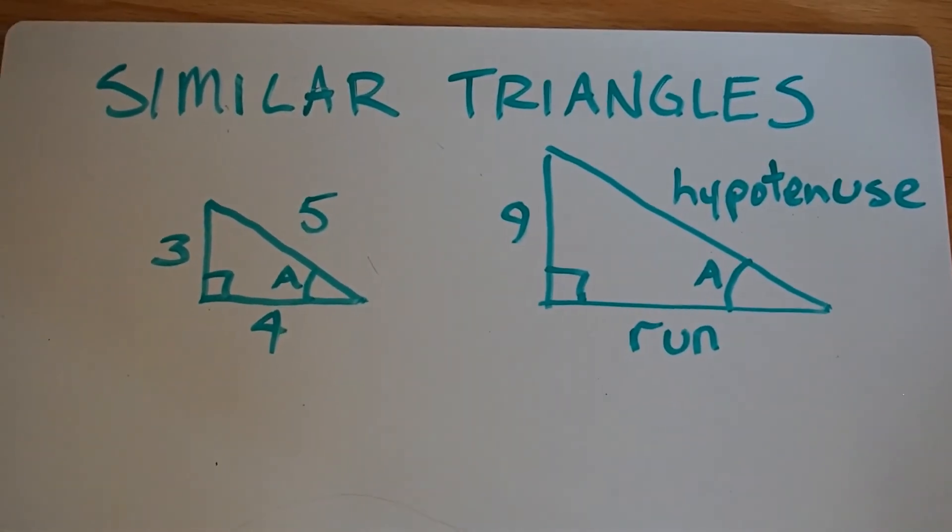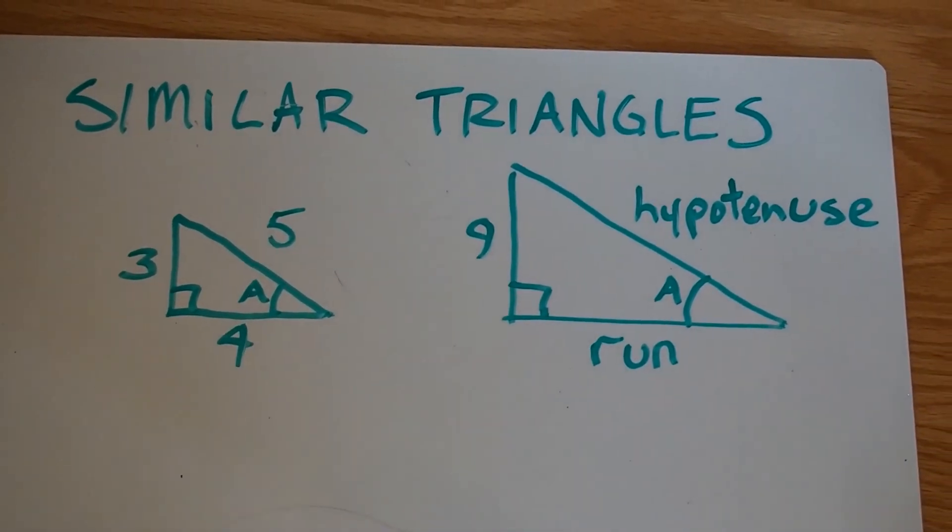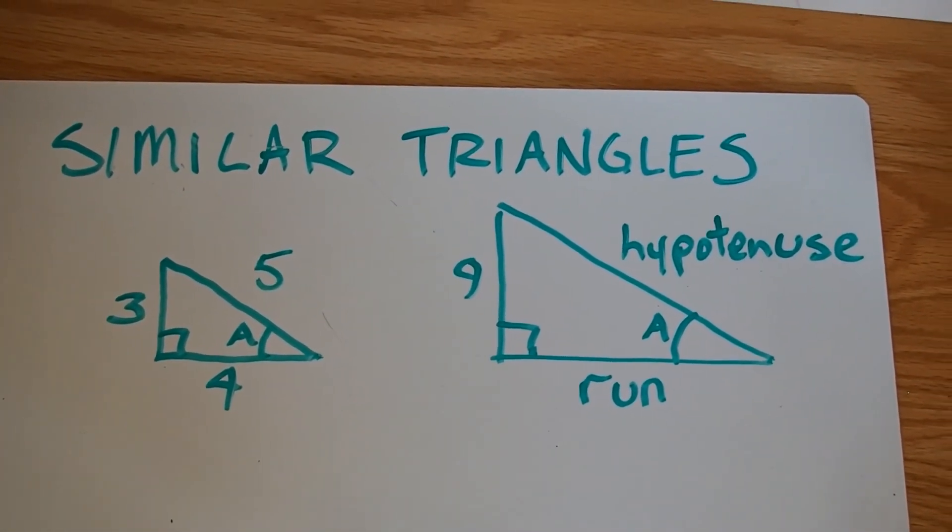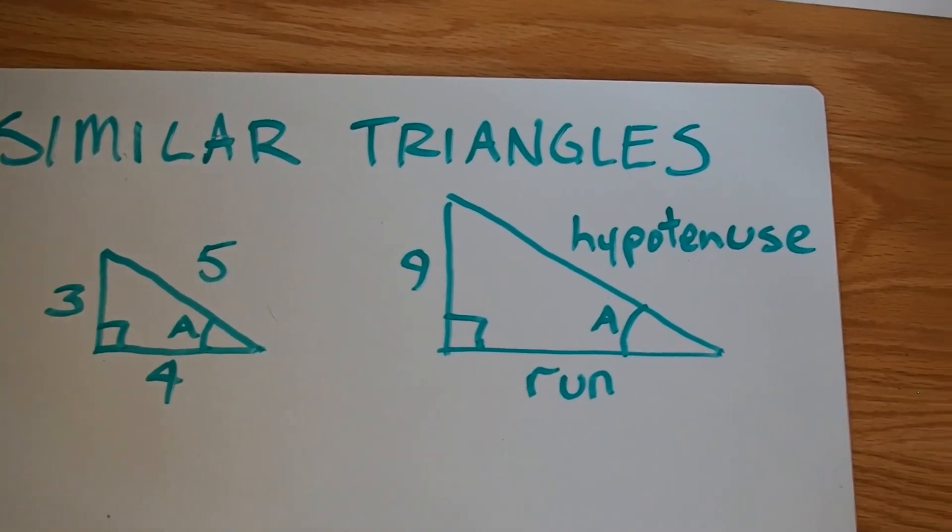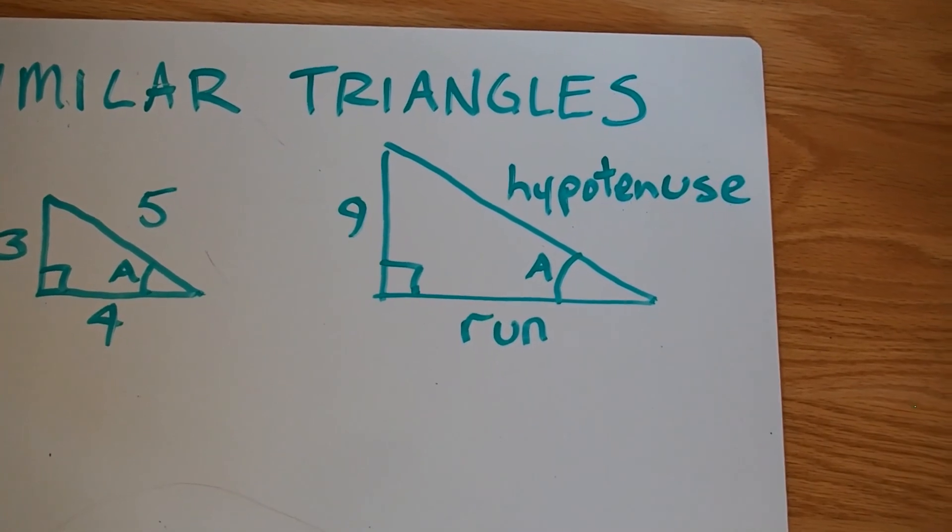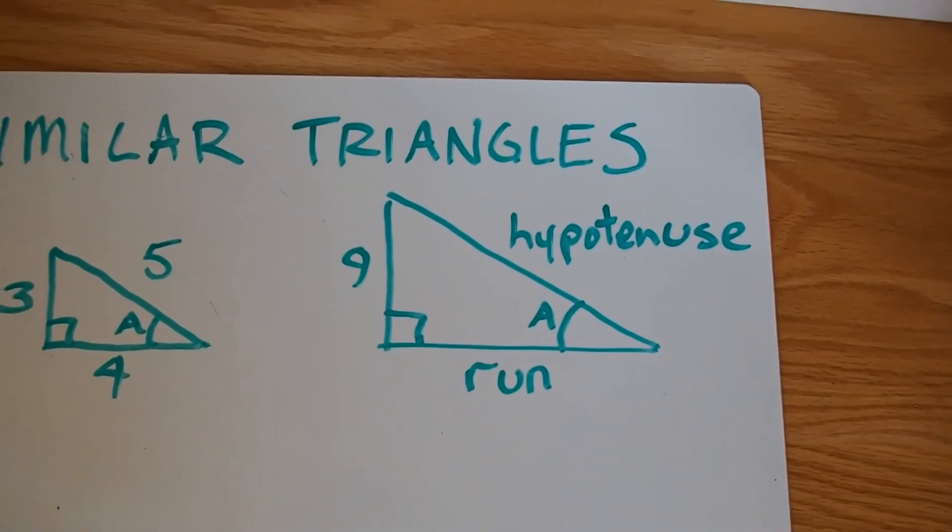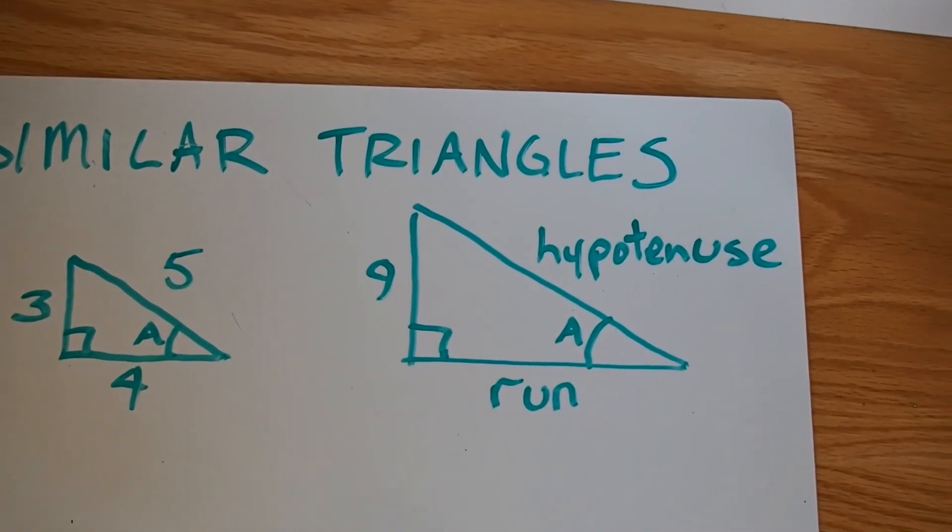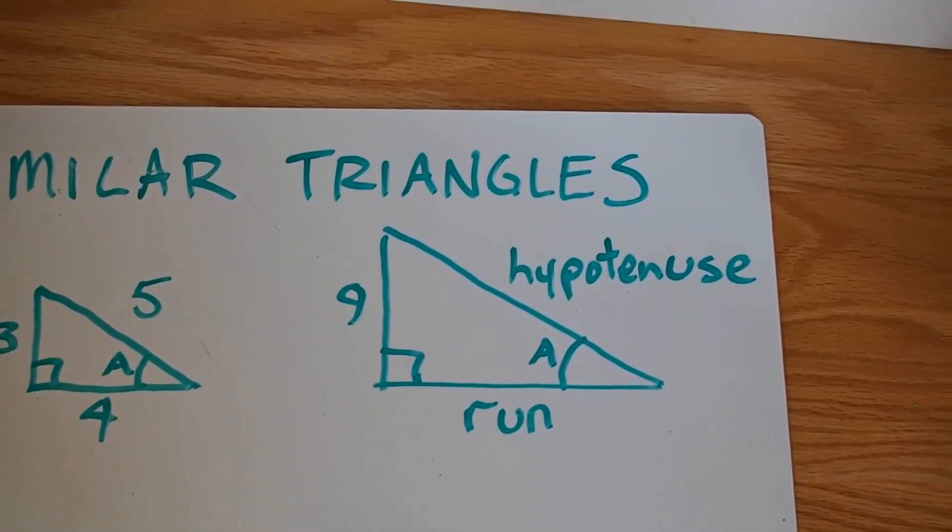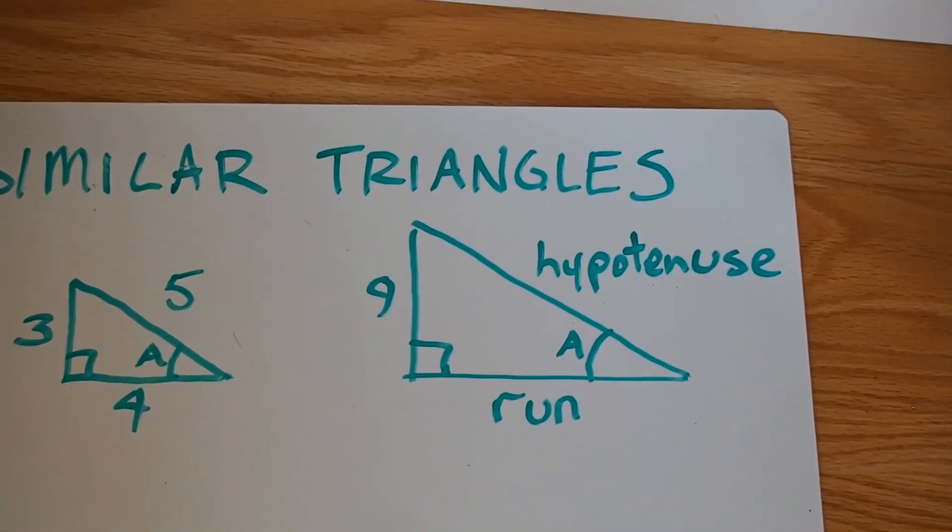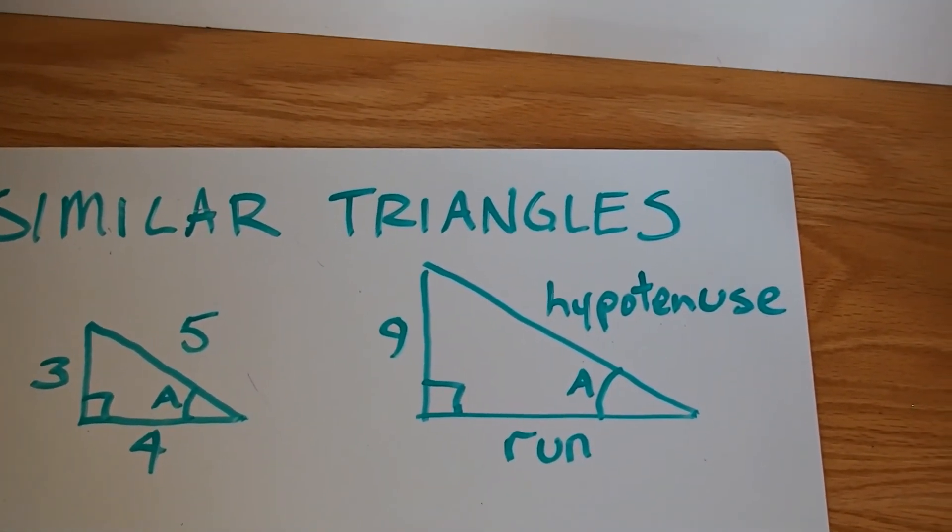So here I have a picture of two similar triangles. One of them measures three on the rise, four on the run, and five on the hypotenuse. The big one measures nine on the rise. We don't know the run or the hypotenuse, but we do know that they're both right angle triangles because that's been indicated. And we also know that the smaller angle, angle A, is equal in both of them because they have the same name.